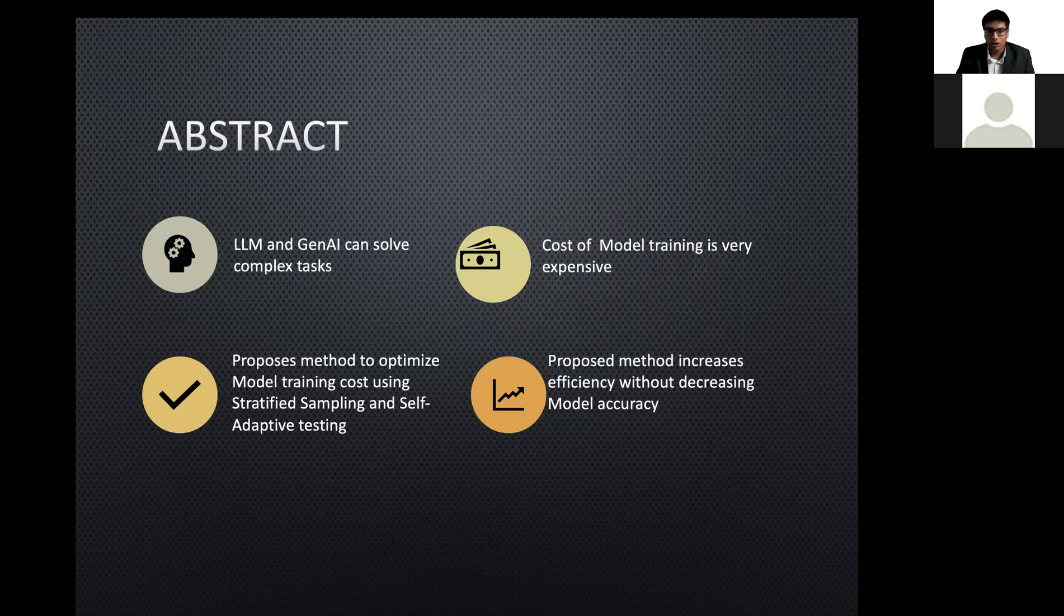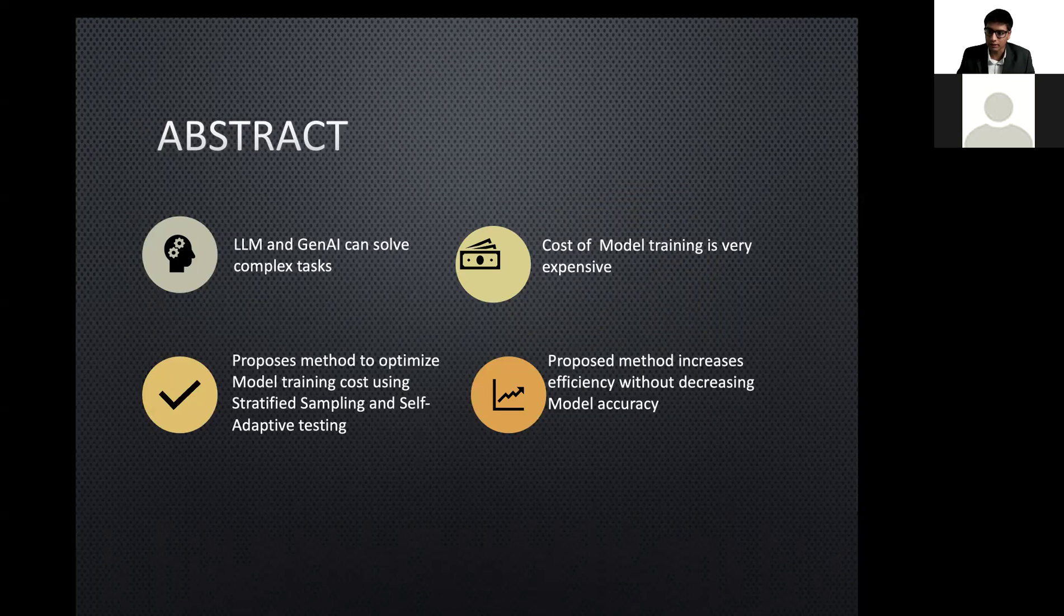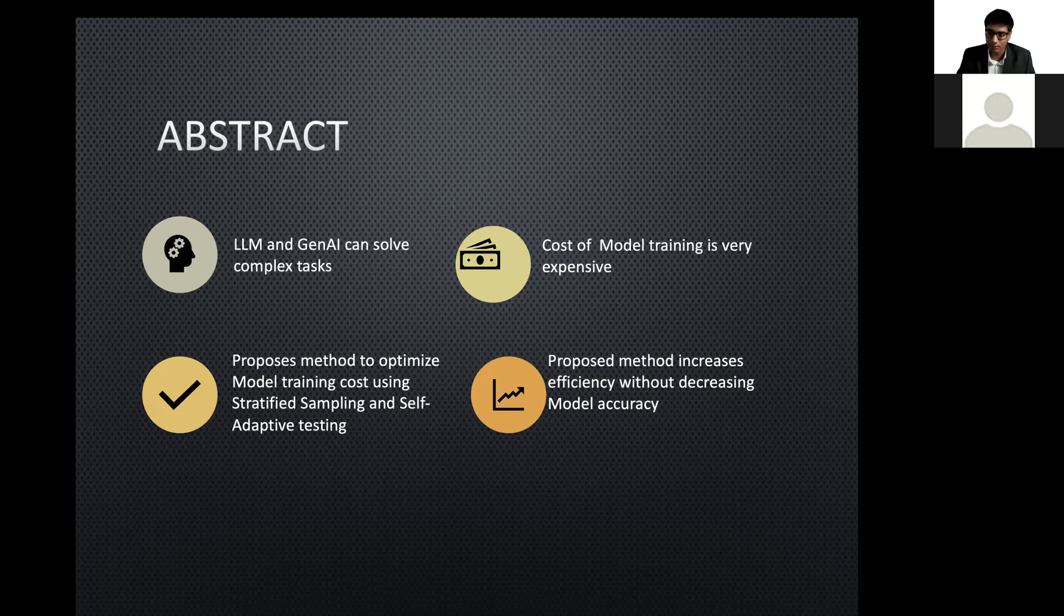Abstract. Large language models and generative AI applications require large datasets for model training which are very costly. We present an approach to optimize datasets that are used to train models by combining a stratified sampling algorithm integrated with self-adaptive comprehensive test framework. The experimental analysis shows that our proposed approach reduces generation of model training datasets around 60% without impacting model accuracy and performance.